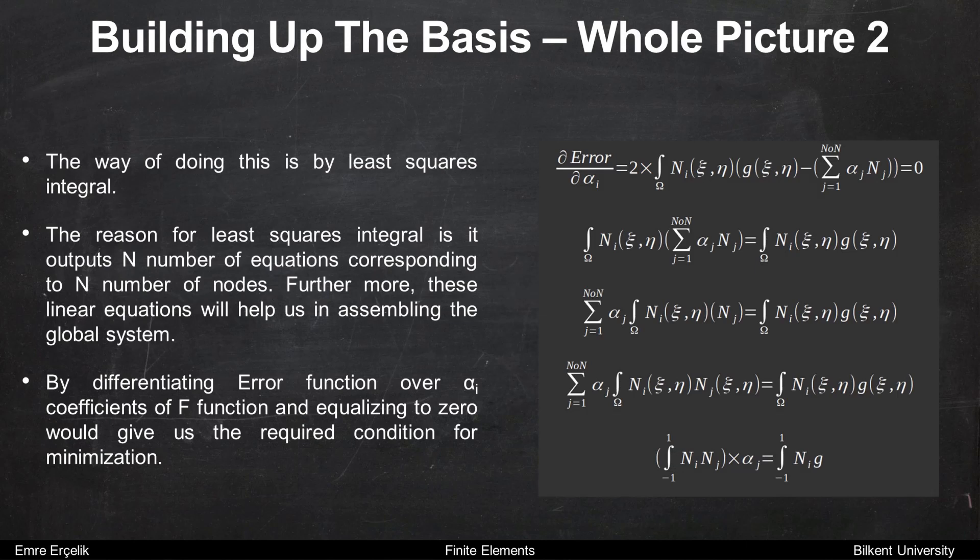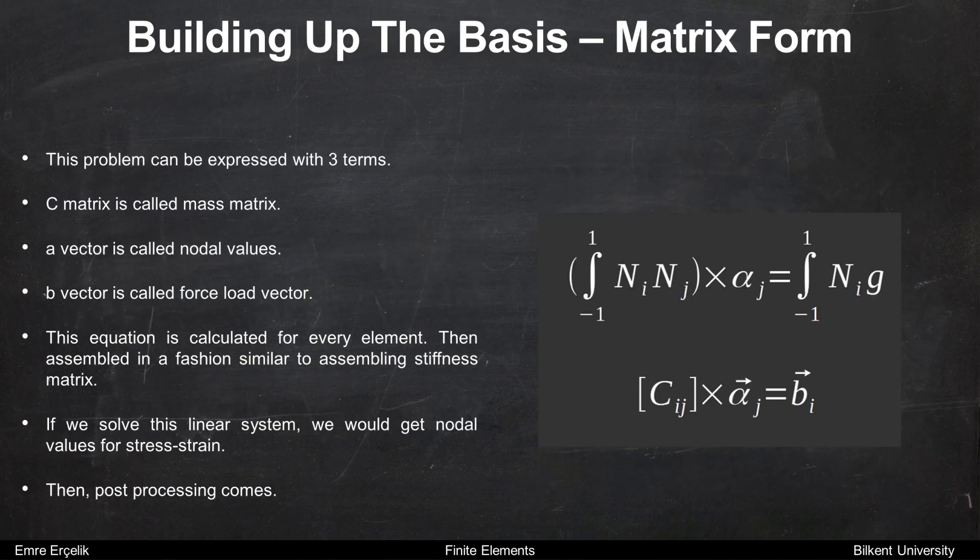The reason for least squares integral is it outputs n number of equations corresponding to n number of nodes. Furthermore, these linear equations will help us in assembling the global system. By differentiating error function over the alpha coefficients of F function and equalizing it to zero would give us the required condition for minimization.